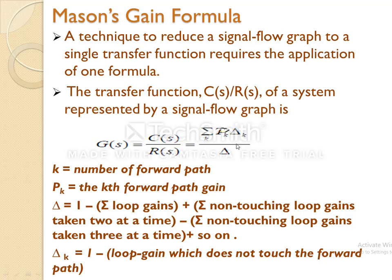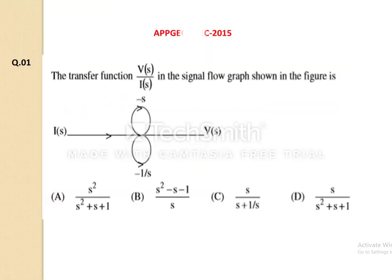Now I will try to analyze previous paper questions based on this concept. This is the first question from the DGC ECE 2015 paper. What we need to find out is the ratio V(s)/I(s) in the signal flow graph — that means we need to find out the transfer function of the given SFG.